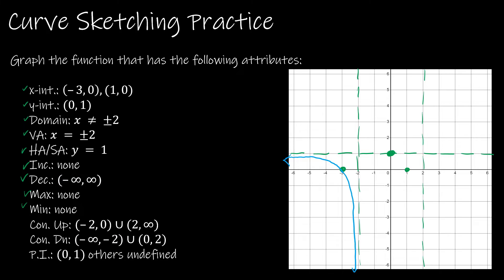Now let's focus on negative 2 to positive 2. From negative 2 to 0, it's concave up, and from 0 to 2, it's concave down. That point at (0, 1) is where the inflection occurs and it changes concavity. Since there are vertical asymptotes, the graph gets close to x = -2 but never touches it. Notice it's concave up — like a cup pointing up — then at the inflection point it changes to concave down and approaches x = 2 without touching it.